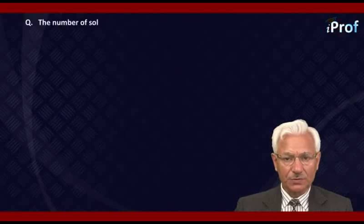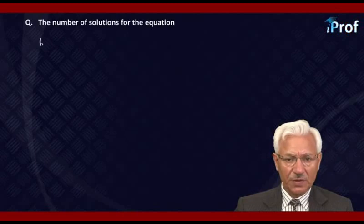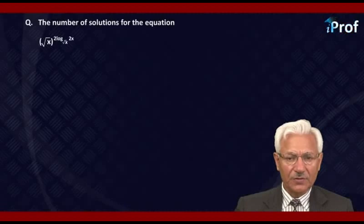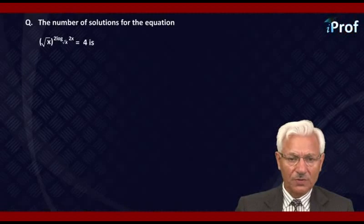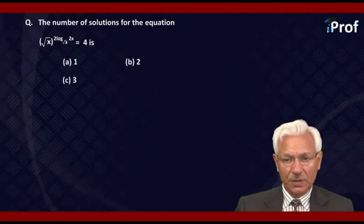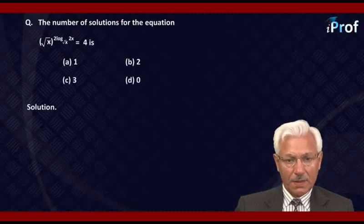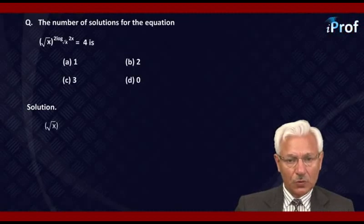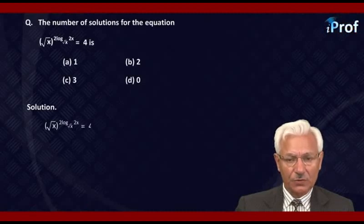The number of solutions for the equation: root x raised to power 2 log of 2x to the base root x, equal to 4. The options are: 1, 2, 3, or none.